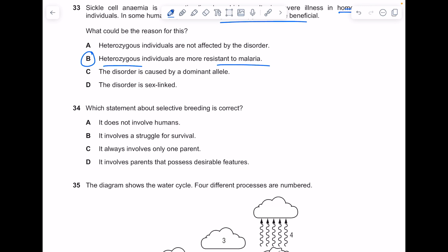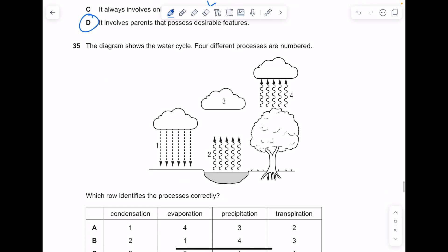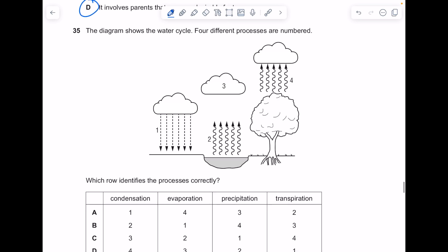Which statement about selective breeding is correct? Selective breeding is when humans select animals and plants with favorable characteristics. It definitely involves humans, it's not natural selection. It always involves parents that possess desirable features.